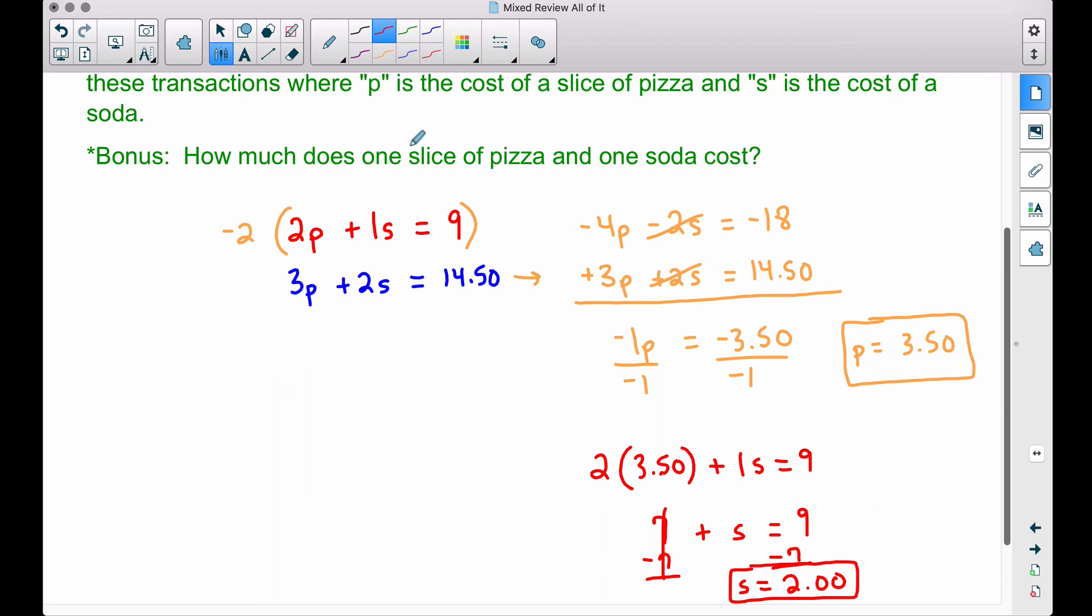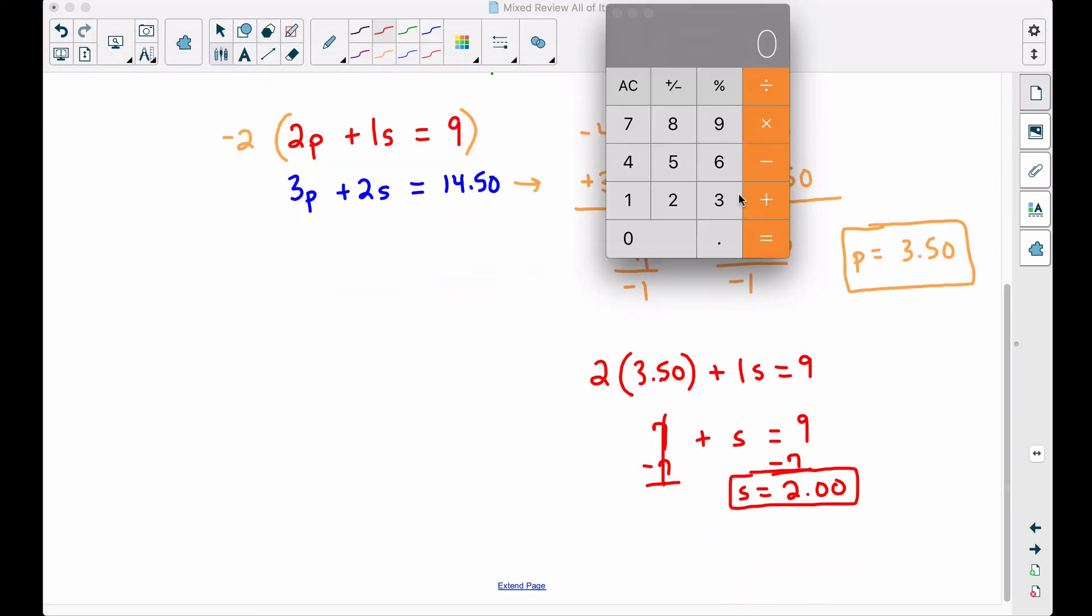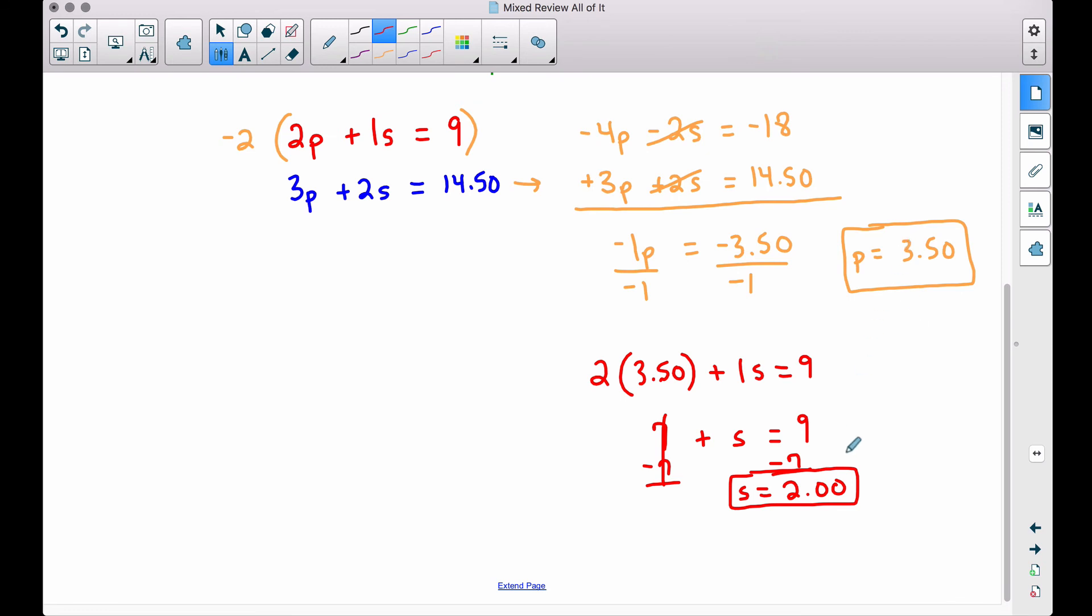So that's the bonus piece there. How much does one slice of pizza cost? Three dollars and fifty cents. How much does one soda cost? Two dollars. And to check that, let's see if it works in this blue equation here. When John and his friend went back and got three slices of pizza, three slices of pizza times three dollars and fifty cents per pizza, that's going to be ten dollars and fifty cents. The two sodas, well remember we said each soda was two bucks, right? So two sodas at two dollars a piece, that's going to be another four dollars. So if we say plus four dollars, check it out, fourteen dollars and fifty cents.